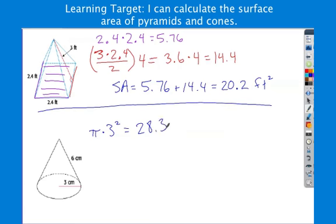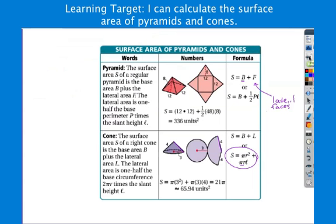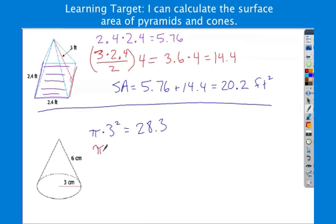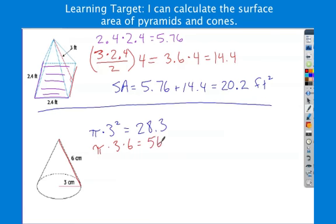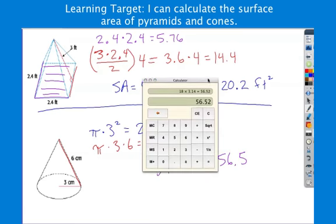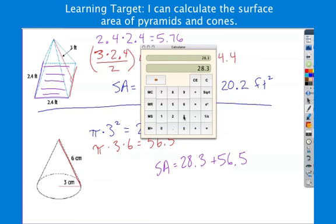Now, remember our formula for the lateral face here is pi times radius times the slant height. So, pi times radius is 3. Slant height is 6. So that's going to be 18 times pi, which equals 56.5. So, last step. Surface area equals 28.3 plus 56.5. You notice for all the surface areas, the last step is always just adding up all the faces. That gives us 84.8 centimeters squared. And that's it.